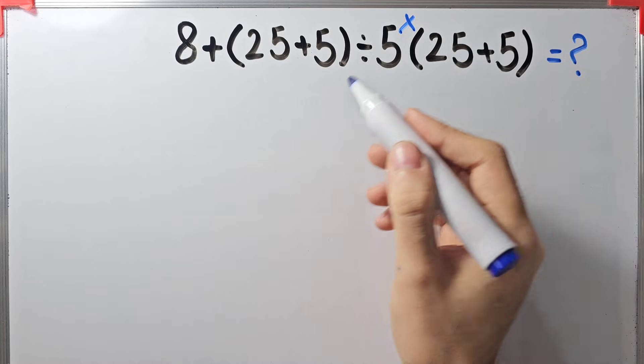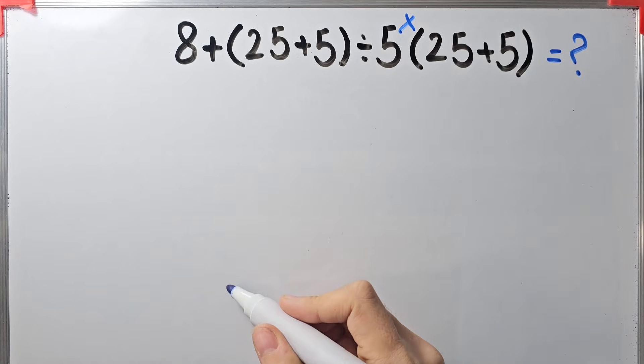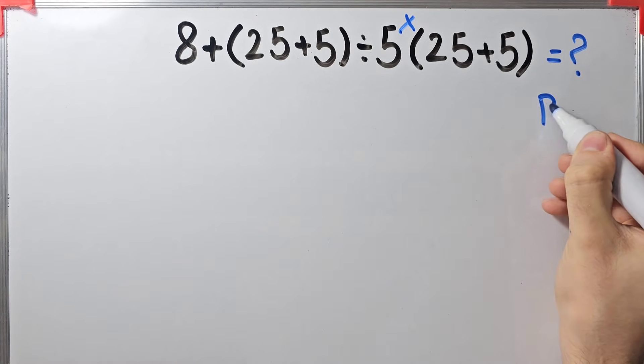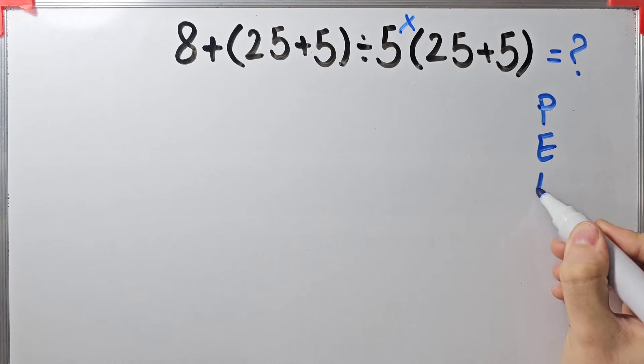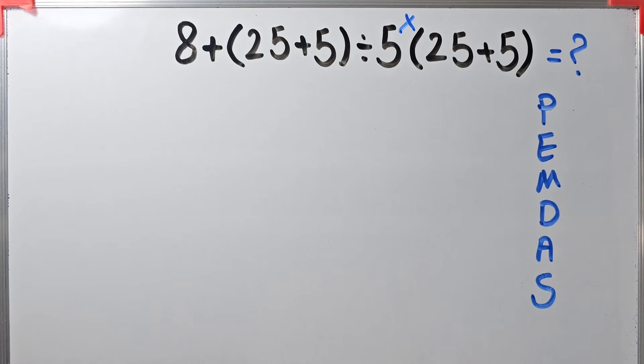In this question we have addition, parenthesis, division, and multiplication. To solve this question we need to follow the PEMDAS rule. PEMDAS shows the priority of the mathematical operations, and if you don't pay attention to this rule you get the wrong answer.